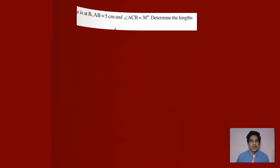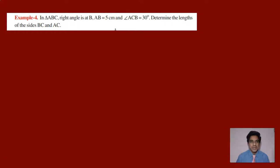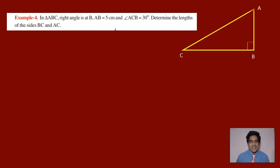Let us move on to example 4. In triangle ABC, right angle is at B. AB is equal to 5 cm and angle ACB is equal to 30 degrees. We need to determine the lengths of sides BC and AC. Here we have a right angle triangle and the right angle is at B.